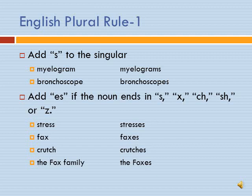For our first English plural rule: add an S to the singular — myelogram becomes myelograms, bronchoscope becomes bronchoscopes. Add ES if the noun ends in S, X, CH, SH, or Z. Stress becomes stresses; fax becomes faxes; crutch becomes crutches; fox becomes foxes. We add ES if it ends in one of those different endings: S, X, CH, SH, or Z.